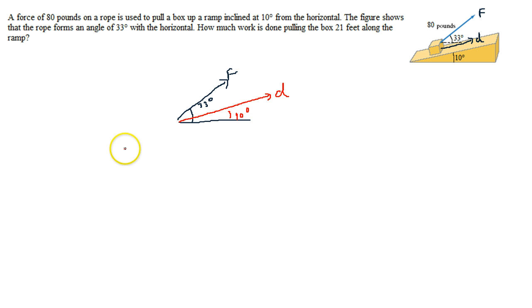What's the angle between the vectors? Because in the formula we need to take the angle between the vectors. In the formula we need to calculate work. We take the magnitude of the force, we take the magnitude of the displacement, and we multiply by the cosine of the angle between them.